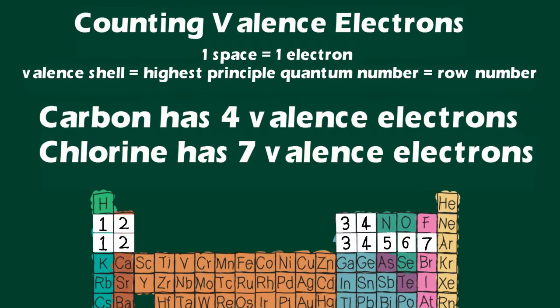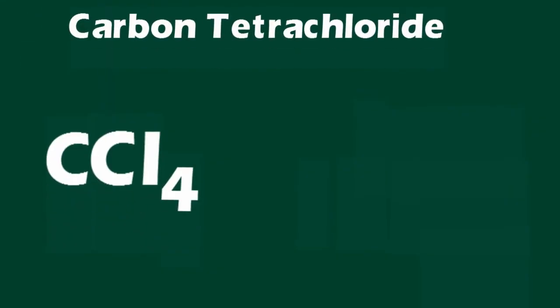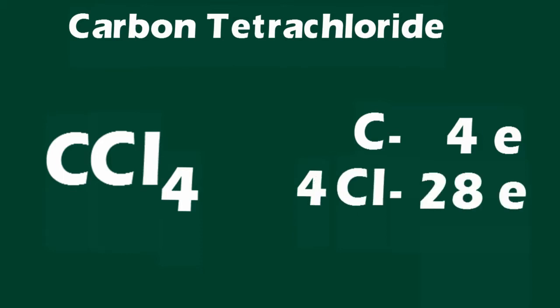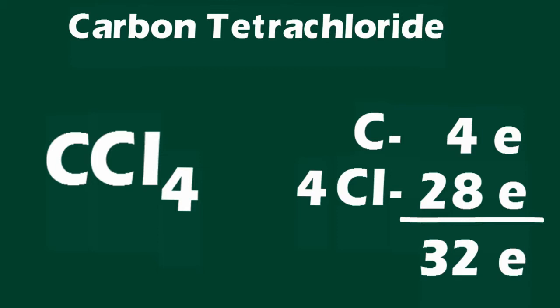For our example, carbon has four valence electrons and chlorine has seven valence electrons. The molecule carbon tetrachloride has four chlorine atoms and one carbon atom, and therefore the molecule has 32 valence electrons — four from carbon and seven from each of the four chlorine atoms.